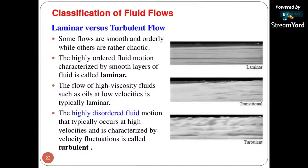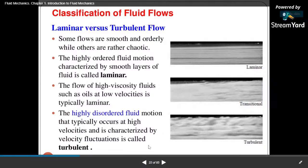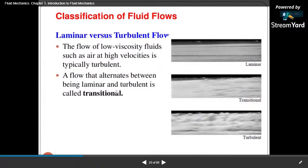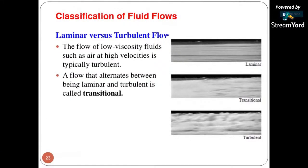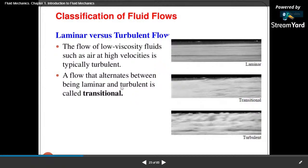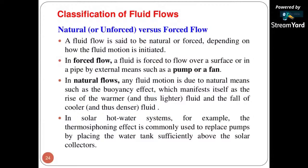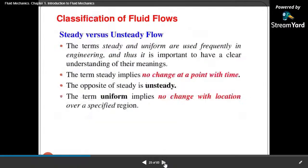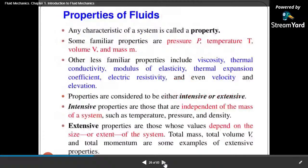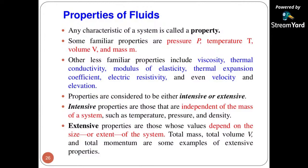Highly disordered fluid motions that typically occur at high velocity are known as turbulent flow. In between laminar and turbulent flow, the intermediate stage is known as transitional flow. The flow of low viscosity fluid such as air at high velocities is typically turbulent. In the next class we will go for natural or unforced versus forced flow, then steady and unsteady flow, and then the properties of fluid. Please share and subscribe to the channel and like the video. Thank you for watching.